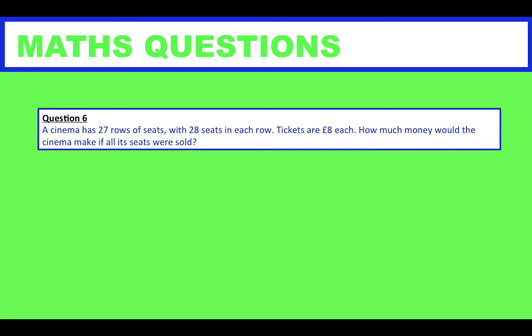Question 6: A cinema has 27 rows of seats with 28 seats in each row. Tickets are £8 each. How much money would the cinema make if all the seats were sold?